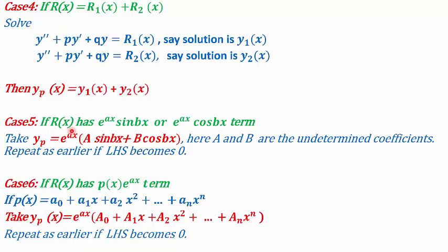In the fifth case, what if r(x) is a combination of exponential and sine or cosine terms? We take yp = e^(ax)(A·sin(bx) + B·cos(bx)) and repeat the same process as before. In the sixth case, if r(x) is a polynomial times e^(ax), we take yp = e^(ax)(A₀ + A₁x + ... + Aₙxⁿ) and repeat the same process, multiplying by x or x² if the left-hand side becomes 0.